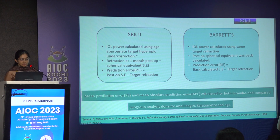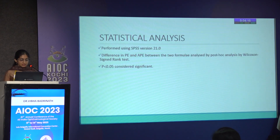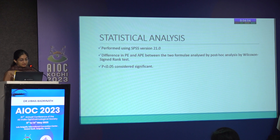In both groups, the mean prediction error and the mean absolute prediction error were compared. Subgroup analyses were further done for axial length, keratometry, and age. Statistical analysis was performed using SPSS version 21. The differences in predictive error and absolute predicted error between the two formulae were analyzed by the Wilcoxon Signed-Rank test. A p-value of less than 0.05 was considered significant.